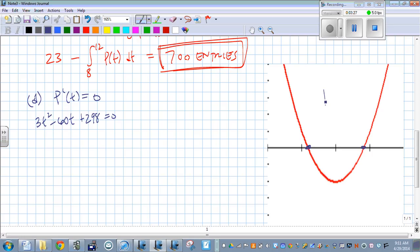Well, this is the graph of the derivative of p of t. So the derivative is positive in this interval, then it's negative, and then it's positive.